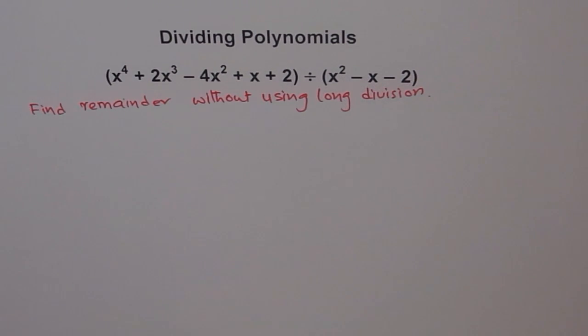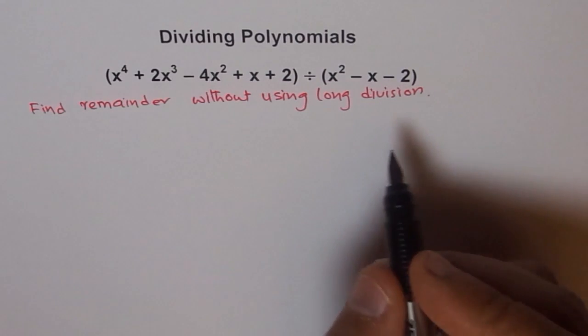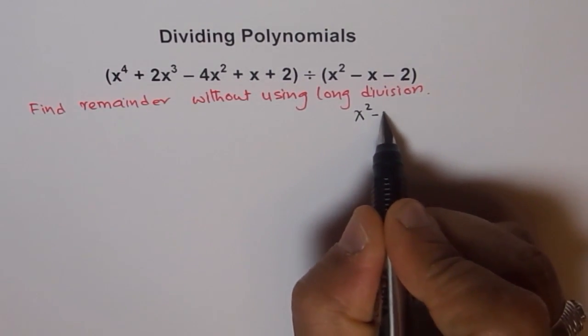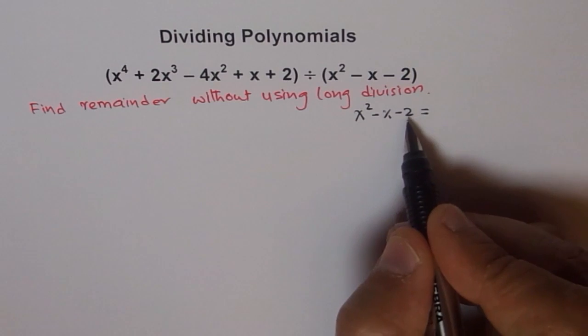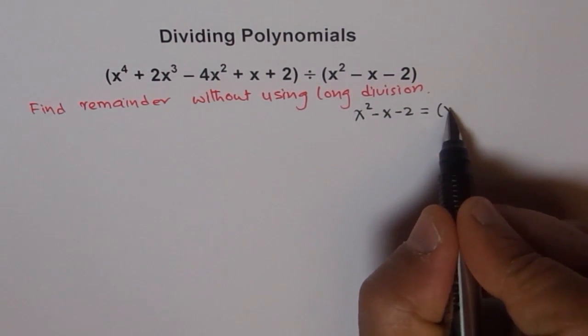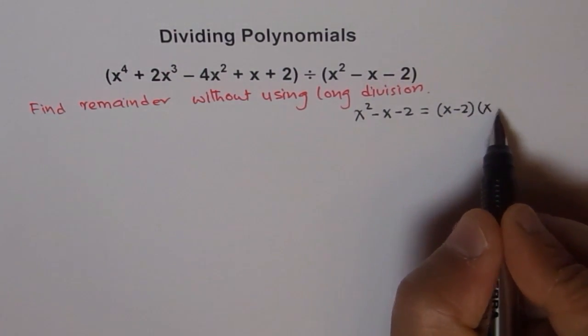To solve this kind of problem, where we are trying to do using remainder theorem, let's first factor this, x² - x - 2. So we can write this as x² - x - 2 as, product is -2, sum is -1, and therefore, it should be (x - 2)(x + 1).